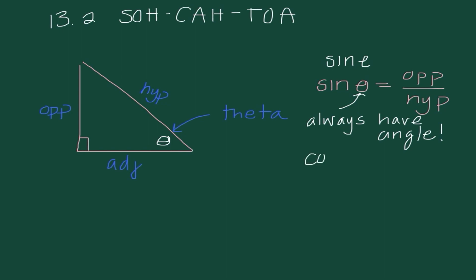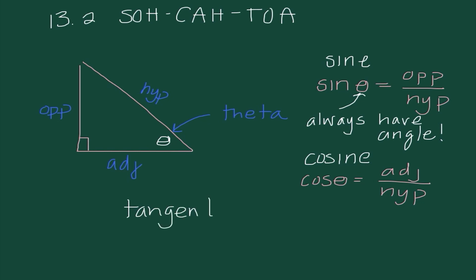Our next trig function is cosine. Cosine is spelled like sine but with CO in front of it. Cosine of theta is equal to the adjacent over the hypotenuse, so this ratio would be the adjacent side over the hypotenuse. And lastly, tangent — the TOA part — tan of theta is opposite over adjacent. These three trig functions are things you should have worked with previously.